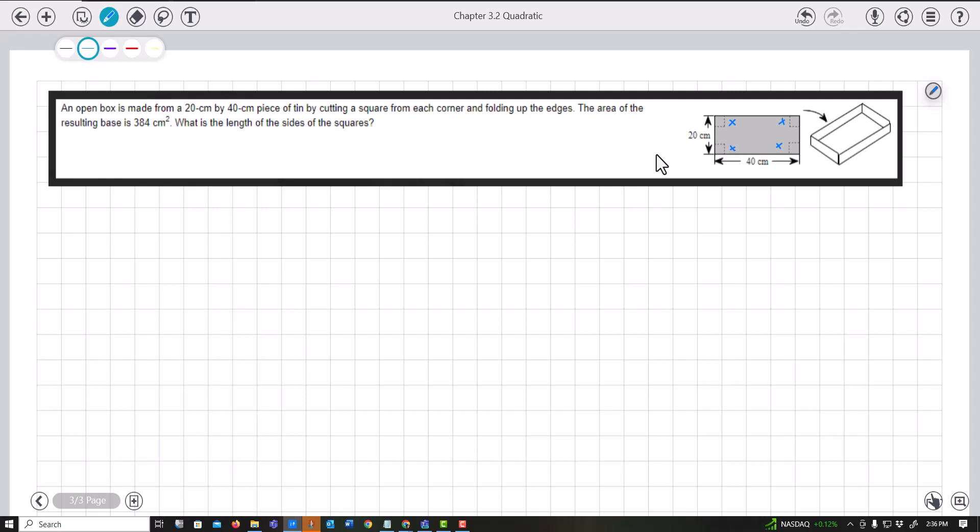If the length is 20, I have to subtract out two of those corners. Then for the width, which is 40, I also have to subtract out these two corners that folded up. This area is 384.